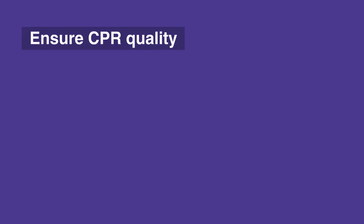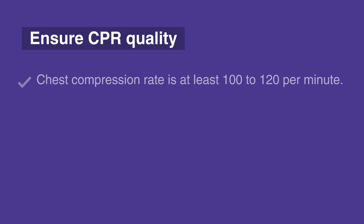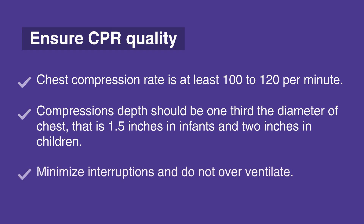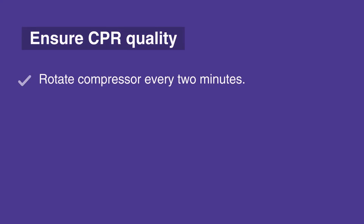To ensure CPR quality when responding to cardiac arrest, make sure the chest compression rate is at least 100 to 120 per minute. Compression depth should be one-third the diameter of the chest — that is 1.5 inches in infants and 2 inches in children. Minimize interruptions, do not overventilate, and rotate the compressor every two minutes.